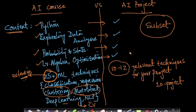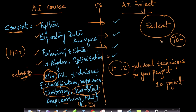In terms of content volume, the AI course has 140-plus hours of content, while the AI project has roughly 70-plus hours — approximately half — because it covers roughly half the techniques of the AI course.